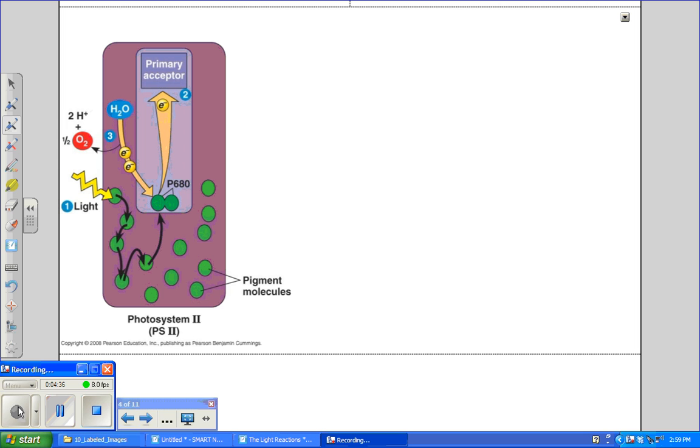The light reactions don't stop here. We have to consider what happens to this electron that's been passed to the primary electron acceptor. It's going to travel down an electron transport chain to P700, which is found in the chlorophyll molecules in Photosystem I.